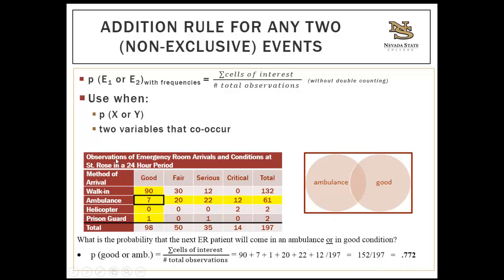This table is a joint frequency distribution table where, for instance, some people are in good condition and walked in, others were in good condition and arrived by ambulance, and so on. The total number of observations — found by summing either all methods of arrival or all conditions — is 197. Go ahead and pause the video to try the next two probabilities.